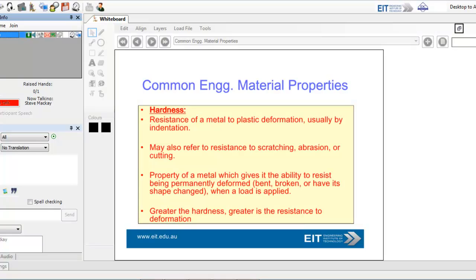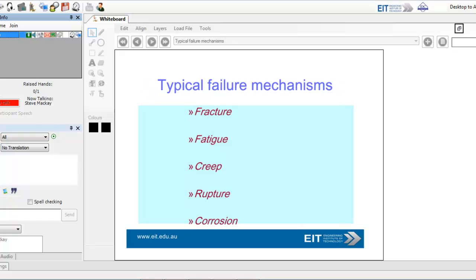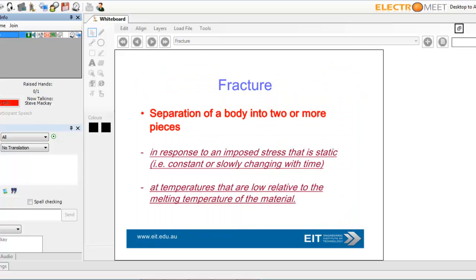Hardness is usually measured by indentation - resistance to the metal's plastic deformation, usually by indentation. Typical failure mechanisms that you have are fracture, fatigue, creep, rupture, and corrosion. We'll look at corrosion in a bit of depth as well.